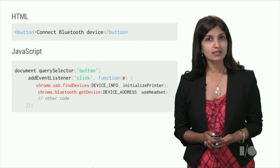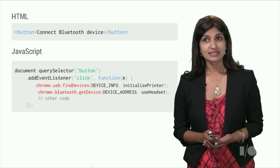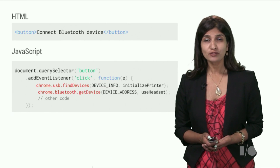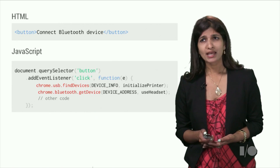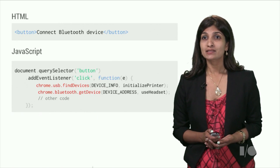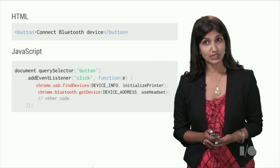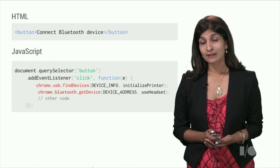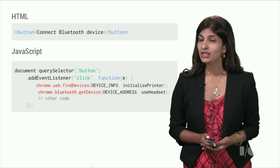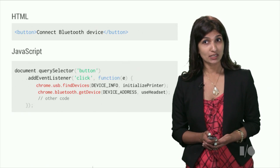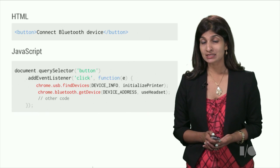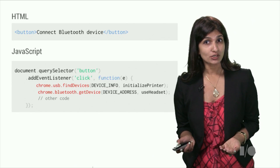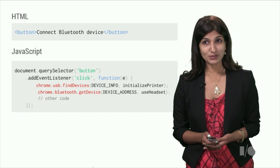A kiosk app is just a Chrome app with HTML, CSS, and JavaScript. You can build powerful apps that interact with network and hardware devices, media tools, and much more. You can enhance the user experience through touch with virtual keyboard support and by listening for mouse and touch events. For example, you can build a point-of-sale kiosk app that uses the Chrome USB API to communicate with USB devices like barcode scanners, credit card readers, and printers. You can also use the Bluetooth API to talk to Bluetooth devices.